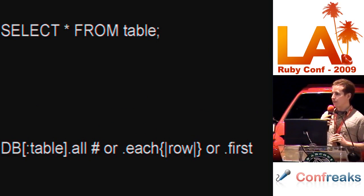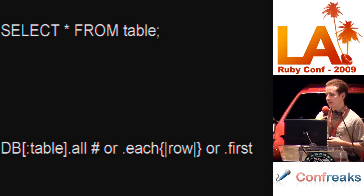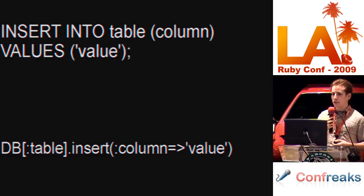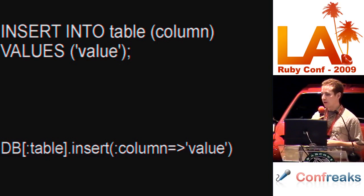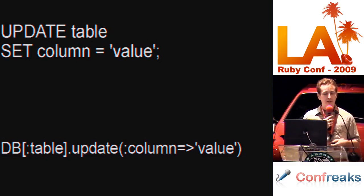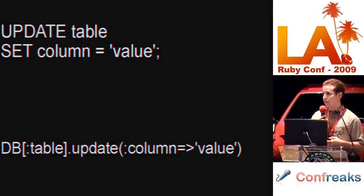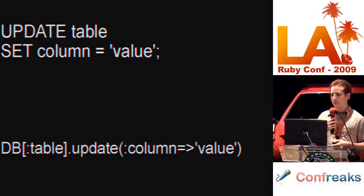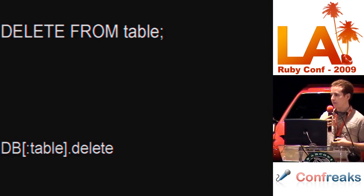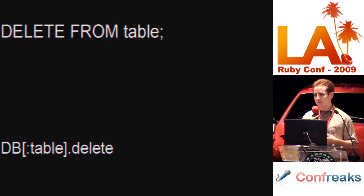Let's go over quickly how to do the four basic query types in Sequel. Select queries are done using the all method to get all the rows. You can also use the each method to iterate over rows as the database adapter provides them, allowing you to process a million-record dataset at once. If you only want the first record, you can use the first method. Inserting rows is done with the insert method and hash arguments where the keys specify columns and the values correspond to that column. Updating rows uses the update method with a similar hash, and it affects all rows of the dataset — so if you use it on an unfiltered dataset, you'll be updating all rows of the table. Filter the dataset first if you only want to update certain rows. Deleting rows is very similar using the delete method — it also affects all rows of the dataset, so filter before deleting.